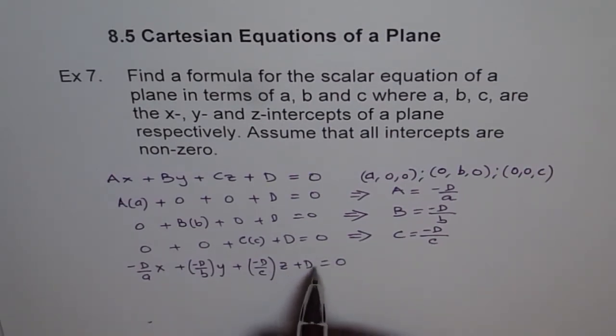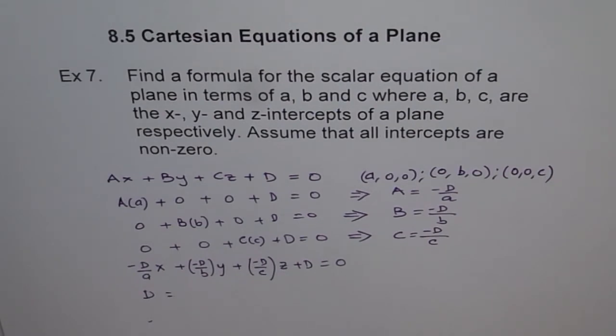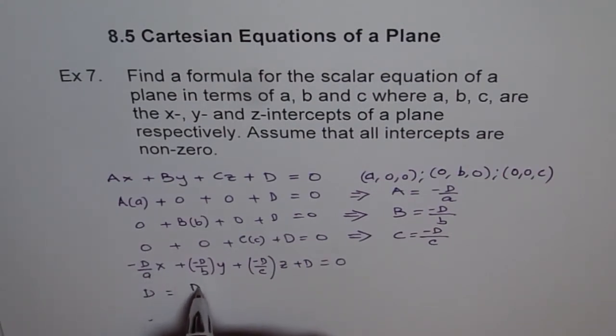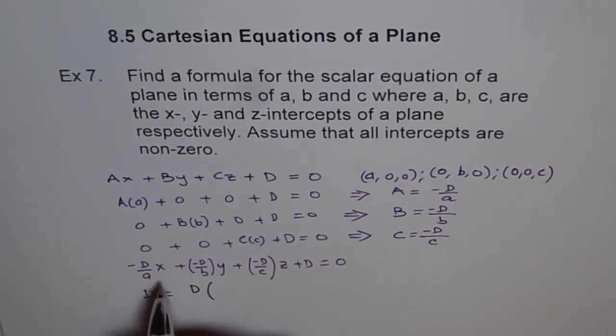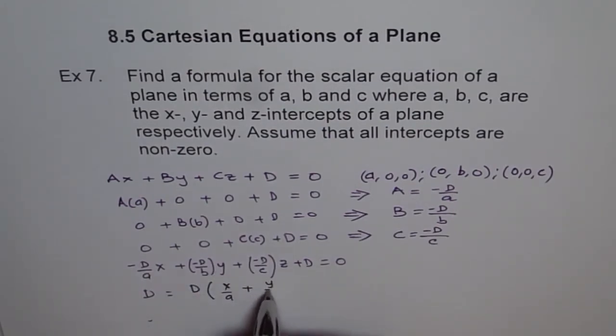Or we will just modify this equation and we say D equals to and we will take all other terms on the right side. So if I do that and I will take minus D, so D times I get X over A plus Y over B plus Z over C.